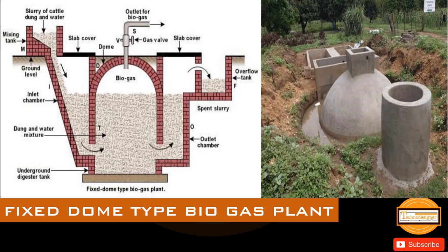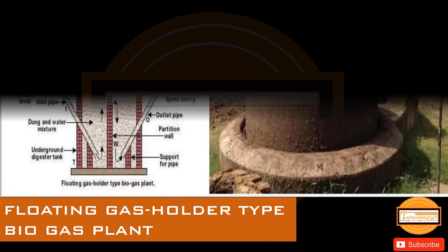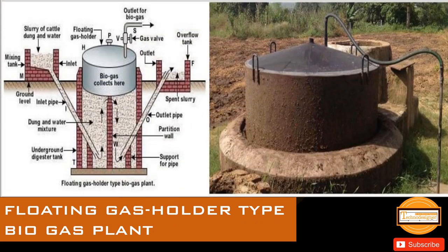In the fixed dome type biogas plant, there is a mixing tank and an overflow tank on both sides of the plant. The mixing tank is installed at ground level. A slurry of cattle dung and water is introduced via the mixing tank into the plant. The temperature of the biogas plant is very high. Biogas is produced inside the dome at constant volume and released at the outlet for use in the power plant. The process of producing biogas is the same for the floating gas holder type, with the only difference being that it has constant pressure inside the dome and has a floating drum where the biogas is collected.